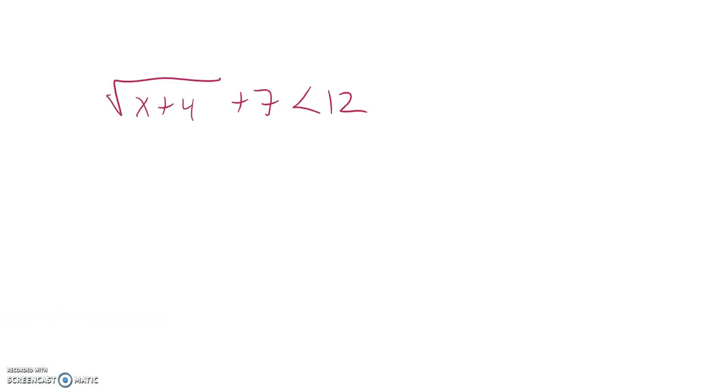We want to figure out when the square root of x plus 4 plus 7 is less than 12. So I'm going to get that square root all alone by subtracting 7 from both sides first thing.